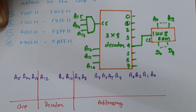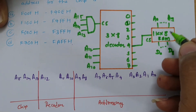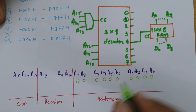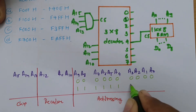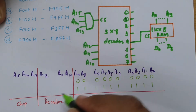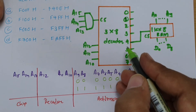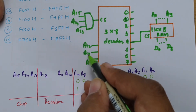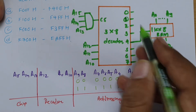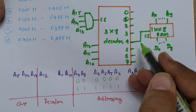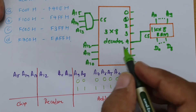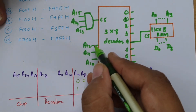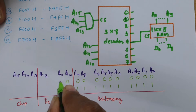For the initial address of this RAM, lines A0 to A9 should all be 0, and for the final address they should all be 1. To select the fourth line of the 3×8 decoder (lines are numbered 0 to 7), the decoder input A10, A11, A12 must be 0, 0, 1 — so A12=0, A11=0, A10=1.